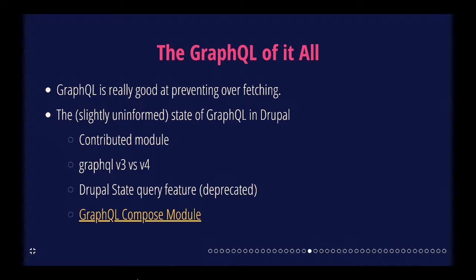Talking about overfetching definitely leads to GraphQL and GraphQL within the Drupal community. GraphQL is a different query language that's really good at solving the overfetching problem, because in your request you essentially describe the shape of the response that you want. You specify all the fields, exactly how they'd be structured, and the API responds matching that shape.